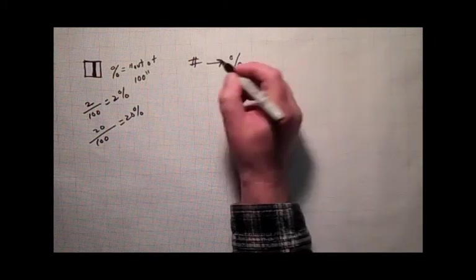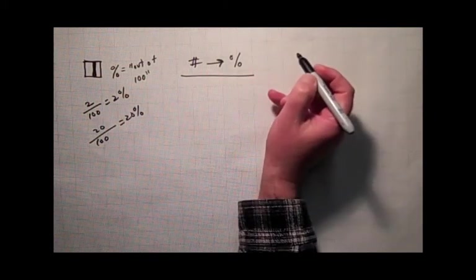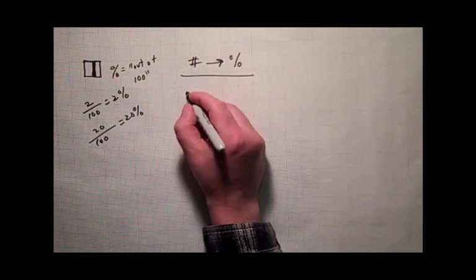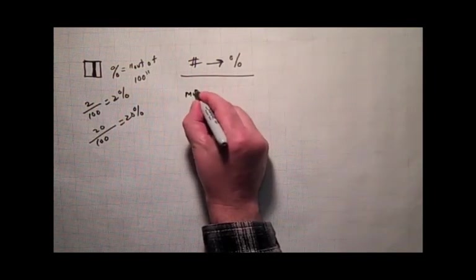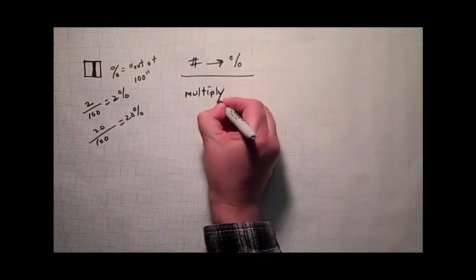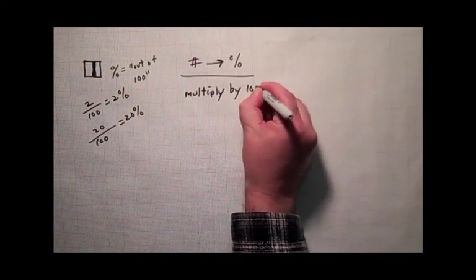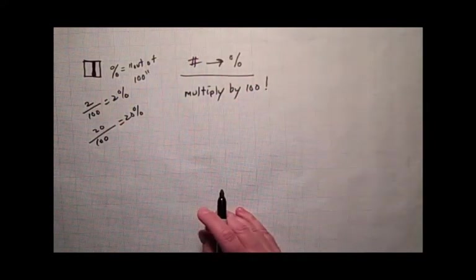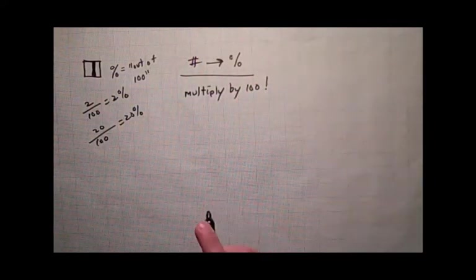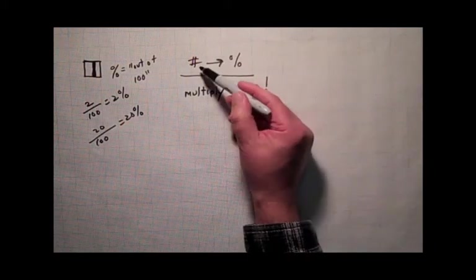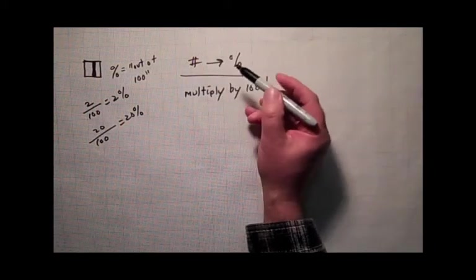And there's one very simple way to convert any number into a percent - follow this rule. All you've got to do is multiply by 100. It'll work every time, no matter what the number is. This number could be a fraction, it could be a decimal, it could be a whole number. It doesn't matter.